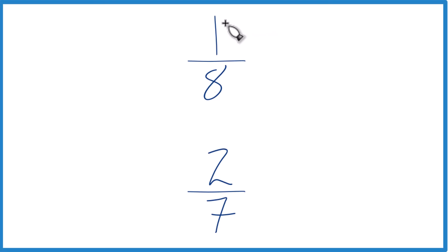So if you're given these two fractions here, 1/8 and 2/7, how do you tell which one is larger, which one's greater?